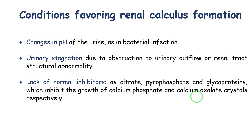Another factor that favors stone formation is a change in the pH of urine, which usually occurs secondary to bacterial infection. Bacteria contain certain enzymes that act on certain analytes and change the urine pH. When this occurs, it favors the precipitation of different salts at different hydrogen ion concentrations.